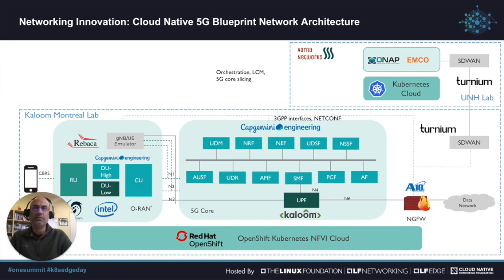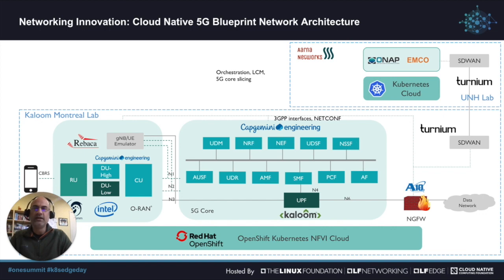In the Montreal lab, the cloud layer or NFVI was a Kubernetes distribution from Red Hat called OpenShift. On OpenShift there were several network functions. The 5G core was from Capgemini Engineering and Colum, Colum being the UPF. The next-gen firewall was from A10 and the RAN was from three companies: Capgemini Engineering, Intel and Genexcom. There was also an optional bypass, a GnodeB UE emulator from a company called Rebaca.